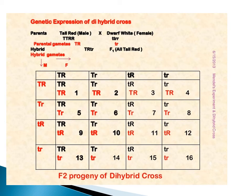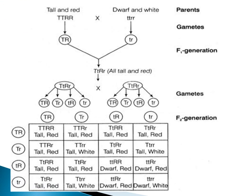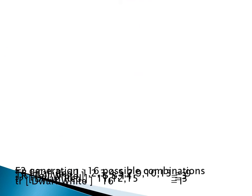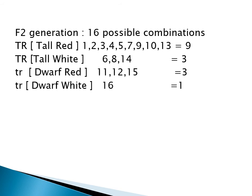These are the pictorial representations of the genetic expression of the dihybrid cross — the parents, the F1 generation, and the F2 generation, which are plotted on a Punnett square board. These are the parents and these are the gametes. The F1 generation is obtained, and the F2 generations are also formed. In the F2 generation, 16 possible combinations are obtained: tall red, tall white, dwarf red, and dwarf white in the ratio 9 is to 3 is to 3 is to 1.